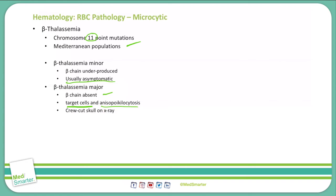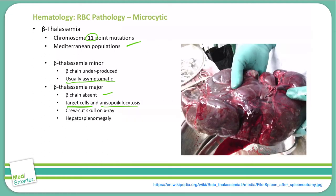On X-ray, you will see a crew cut skull. This crew cut skull is due to marrow expansion as the marrow attempts to create more blood cells to compensate for the poor red blood cells being produced. We also see hepatosplenomegaly — pictured here is a spleen removed from a child that is grossly enlarged due to beta thalassemia.